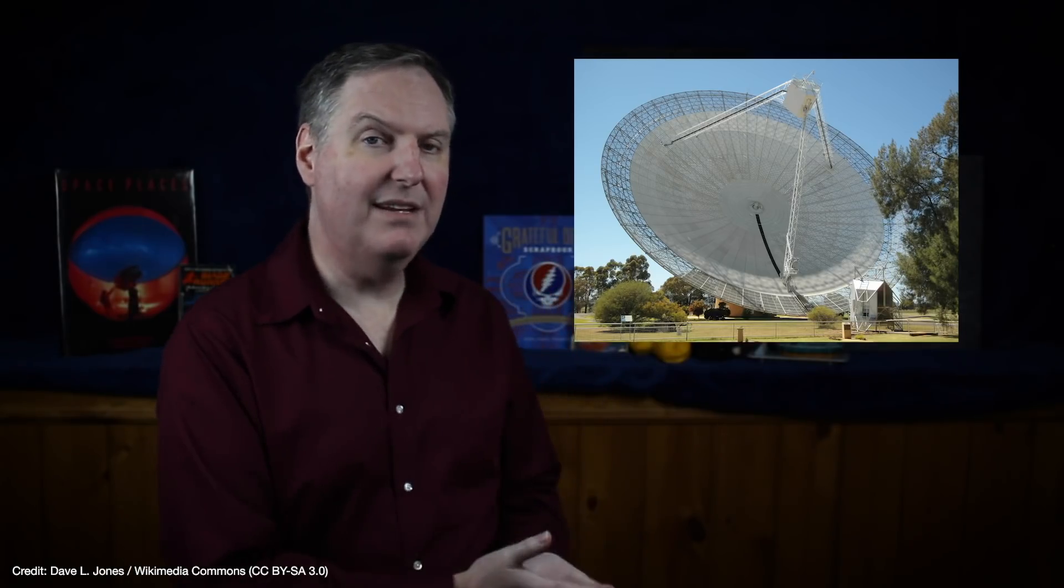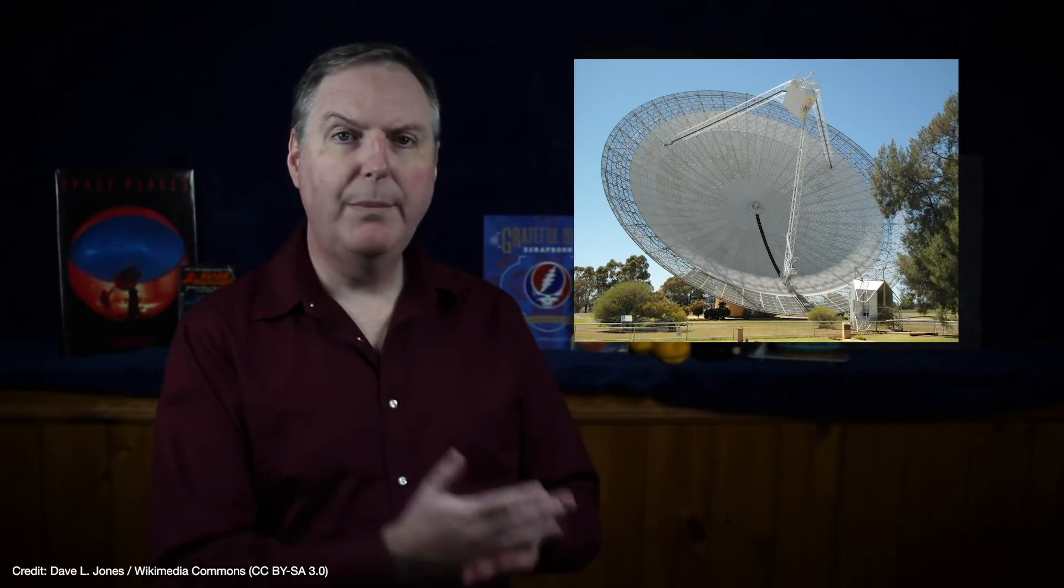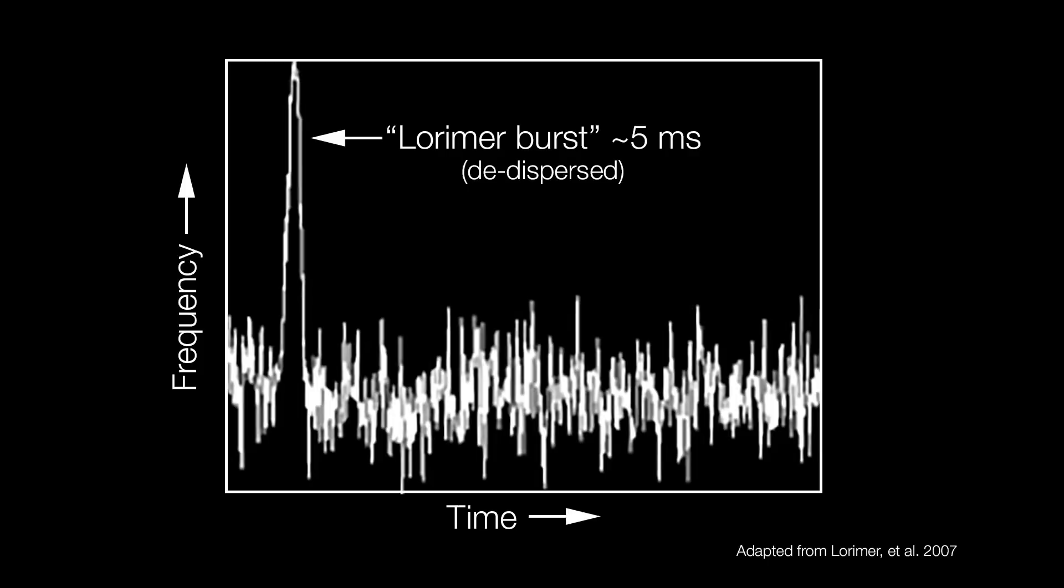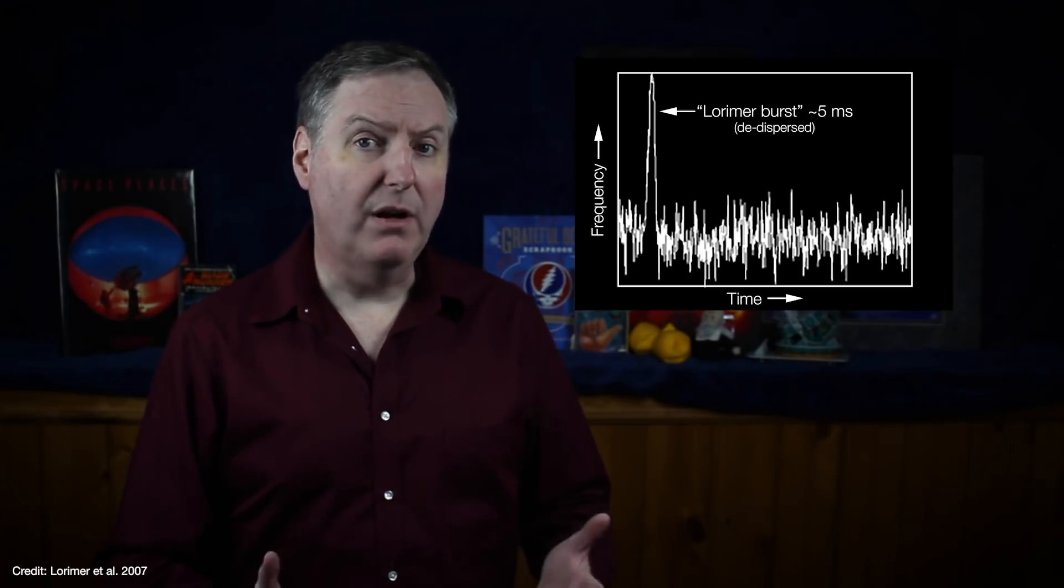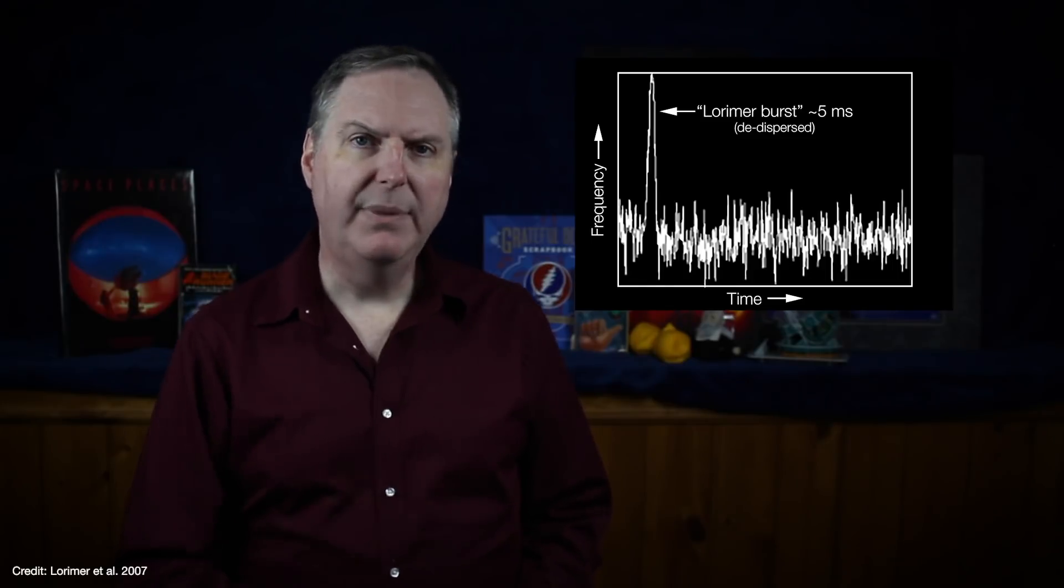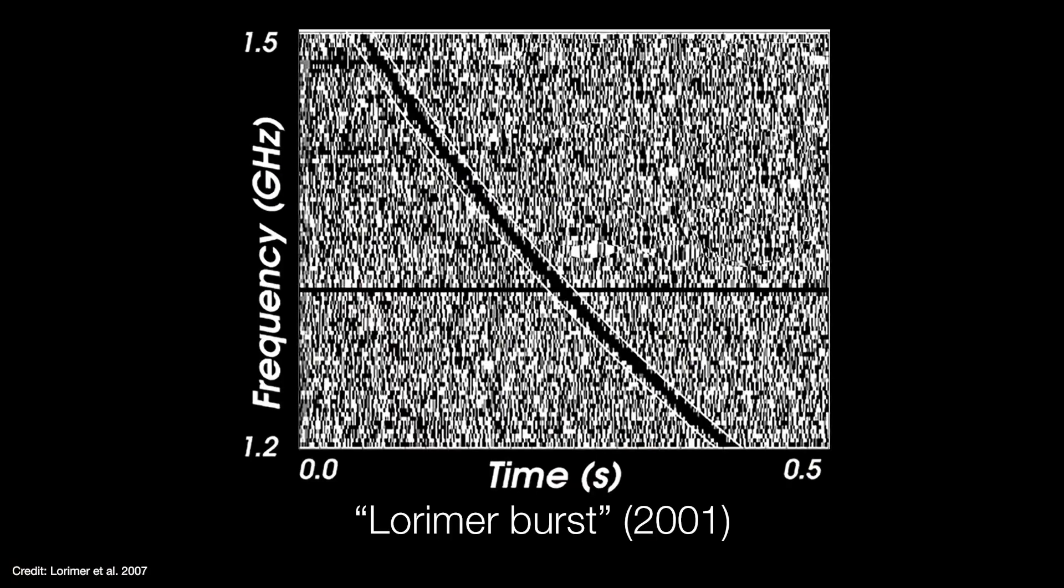Lorimer's student David Narkovic was looking through archival data taken in 2001 by the Parkes radio telescope in Australia. He noticed a powerful burst of radio energy that was so bright it saturated the Parkes antenna. The burst itself lasted all of 5 milliseconds and was gone, never to be seen again. But its signal did not arrive all at once. Instead, the highest frequency waves arrived first, while the lower frequencies were delayed.